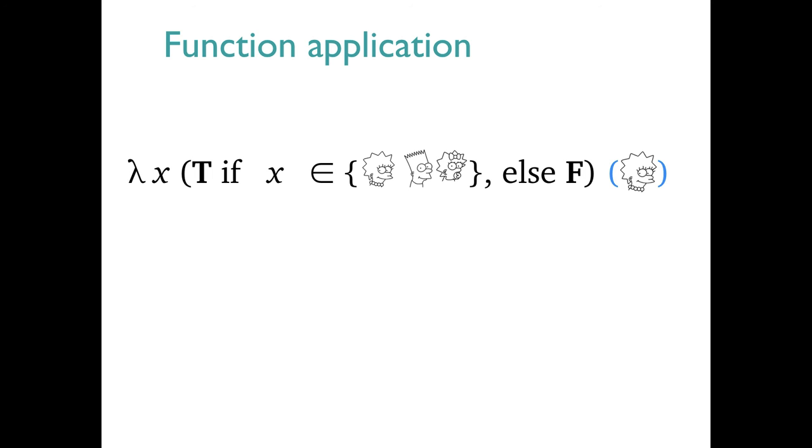The concepts are the same when we use lambda expressions. Here's the child function given as a lambda expression, now with Lisa as the argument in blue parentheses at the right. To calculate the value, we get rid of the outer lambda x, since we are filling that argument slot. I like to imagine the argument Lisa crashing through and destroying it. And then we substitute Lisa wherever there was an x variable in the body of the expression. Now we're essentially just evaluating this assertion of set membership. Since Lisa is in the set, we get the value t in the end.